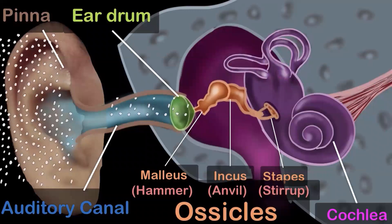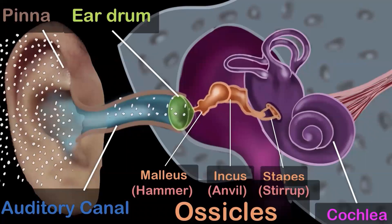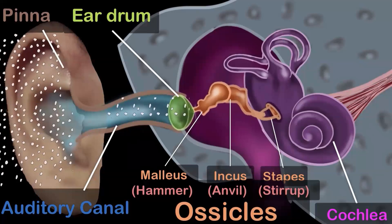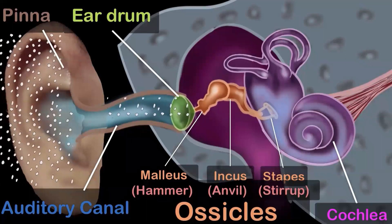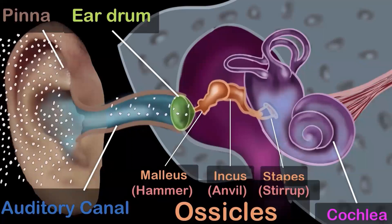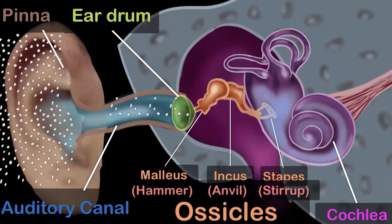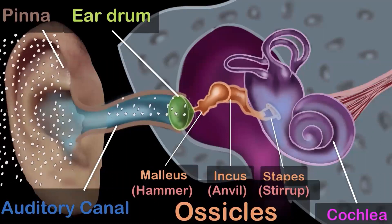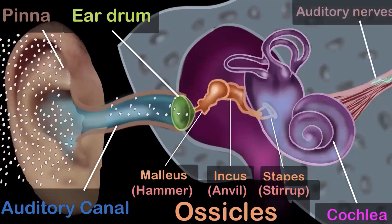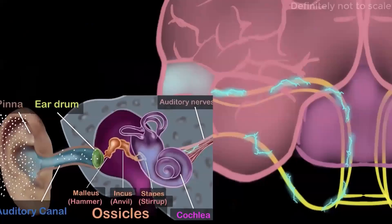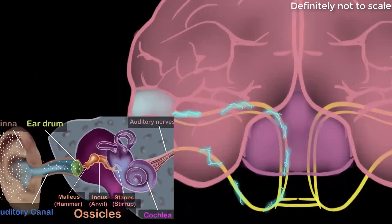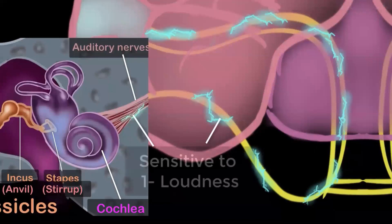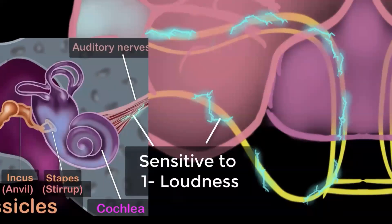The cochlea is super complex and somewhat mysterious — even today there are things about it we do not fully understand. It contains a liquid, and when the stirrup hits the cochlea this liquid starts vibrating. Specialized cells in the cochlea convert these vibrations into electrical signals, which travel through the auditory nerves to the brain where they are finally interpreted as sound. These cells are sensitive to how loud or feeble the sound is, and whether it is high or low frequency.